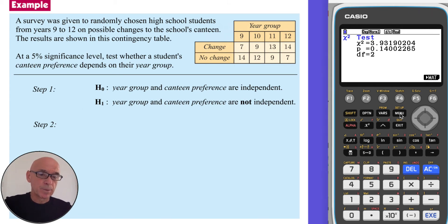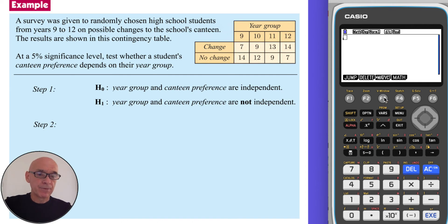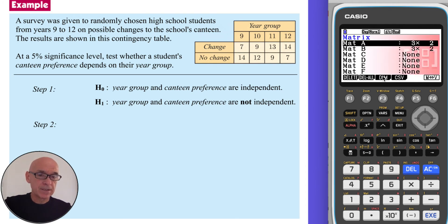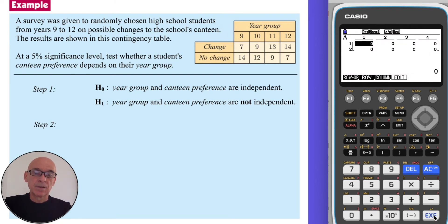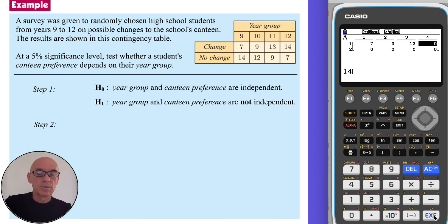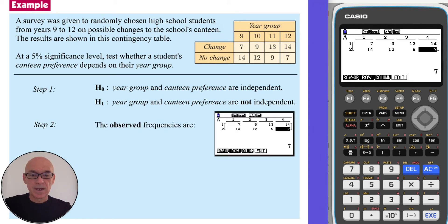To input the observed frequencies, we press menu and option one for the run matrix menu, followed by F3 to dimension matrix A. We change M to equal 2 and N to equal 4, and press execute. Then we input the observed frequencies: 7, 9, 13, 14, 14, 14, 12, 9, and 7, as shown to the right here.